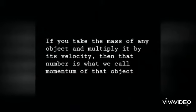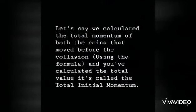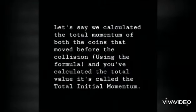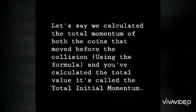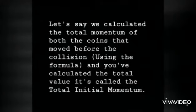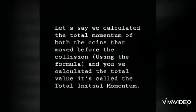If you take the mass of any object and multiply it by its velocity, then that number is what we call the momentum of that object. Let's say we calculated the total momentum of both coins that move before the collision and you've calculated the total value — it's called the total initial momentum.